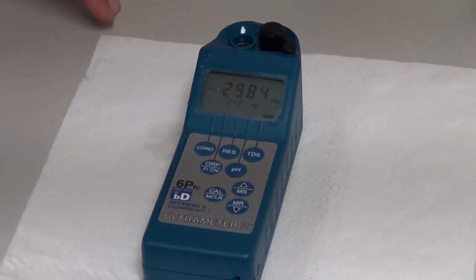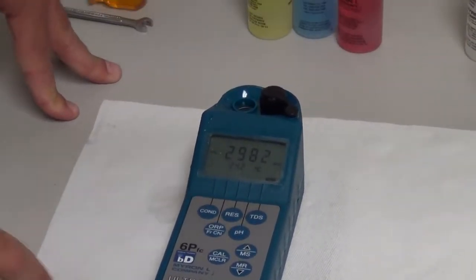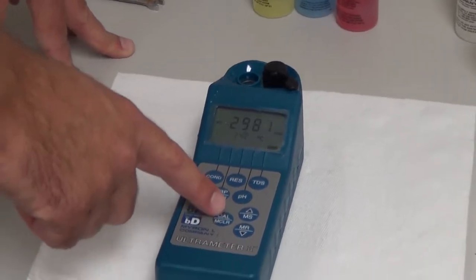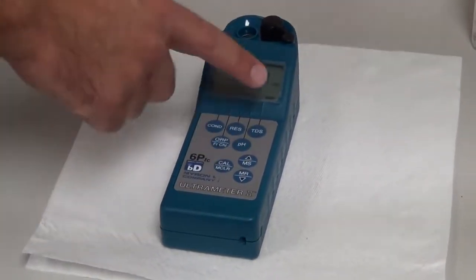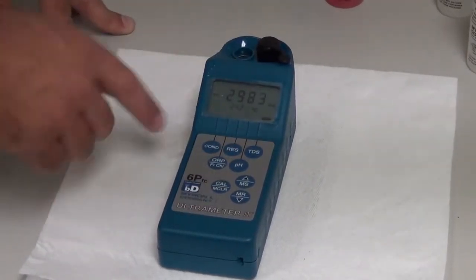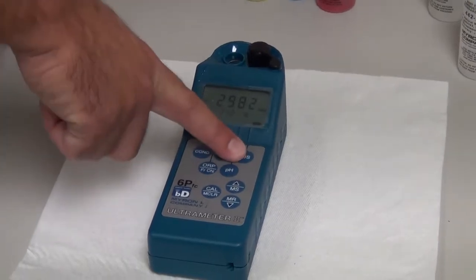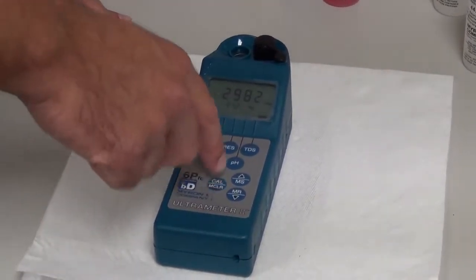Give it a second to allow the reading to settle, and then I will go into the calibration mode. If the display turns off in the middle of your calibration, it's no big deal. Just go ahead and press the parameter button that you're working on at that time. In this particular case, TDS, being the mode that we're in.